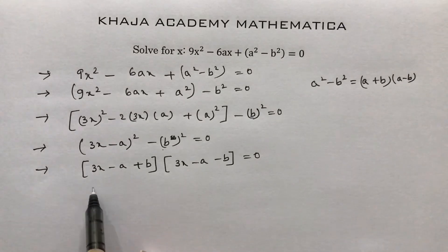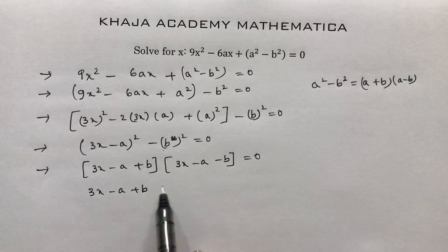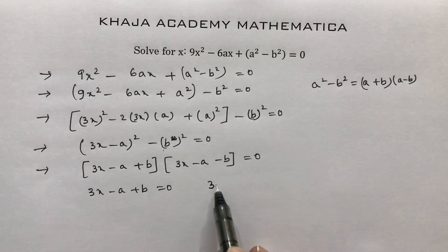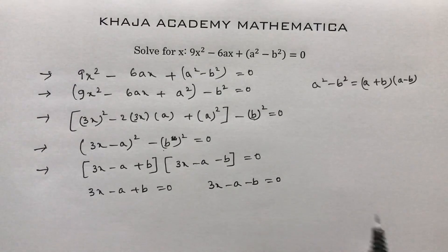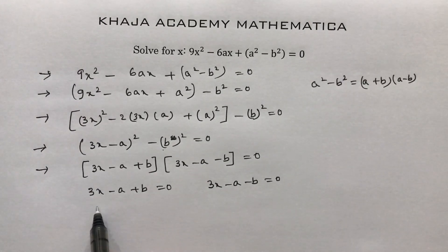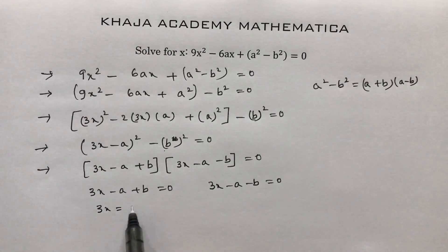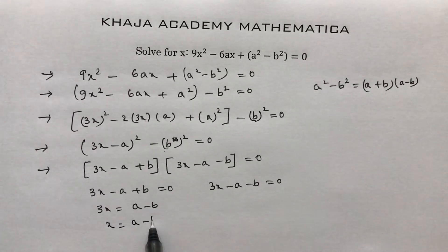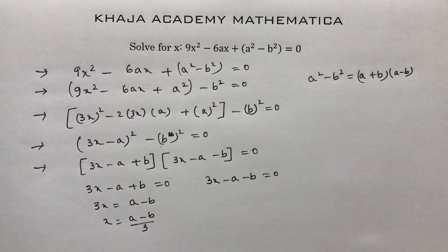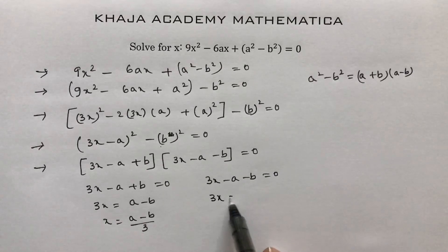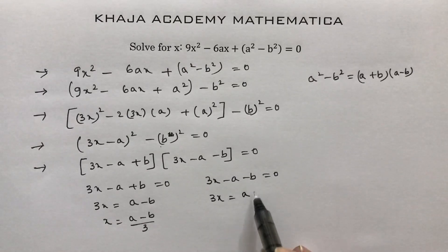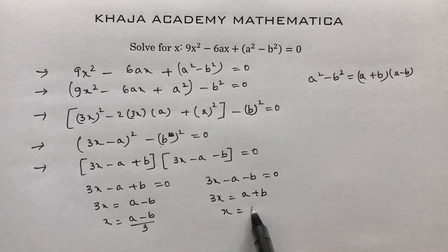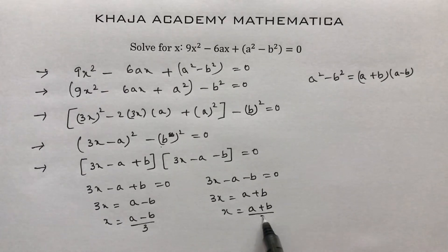Setting each factor to zero: 3x - a + b = 0 gives 3x = a - b, so x = (a - b)/3. And 3x - a - b = 0 gives x = (a + b)/3. These are the two values of x.